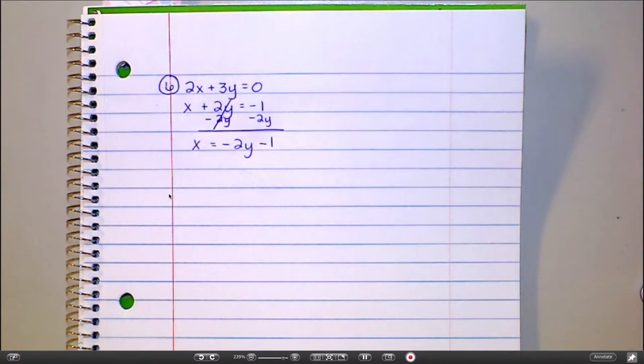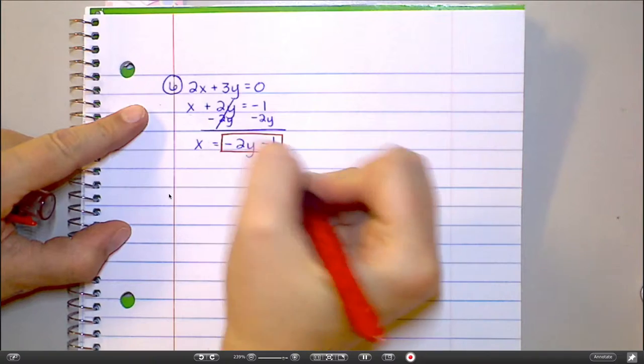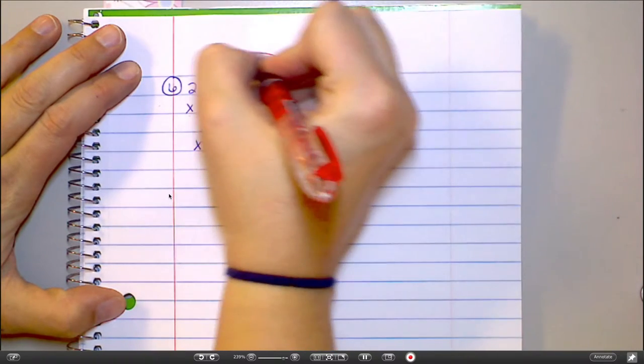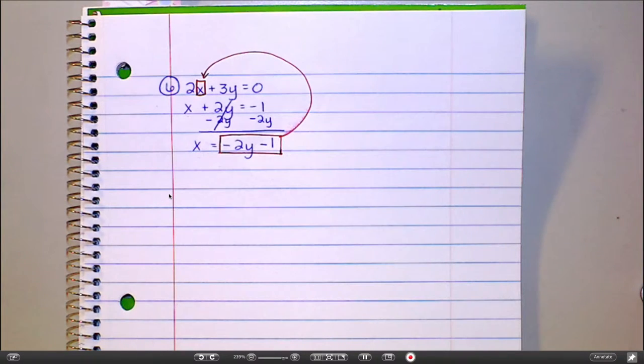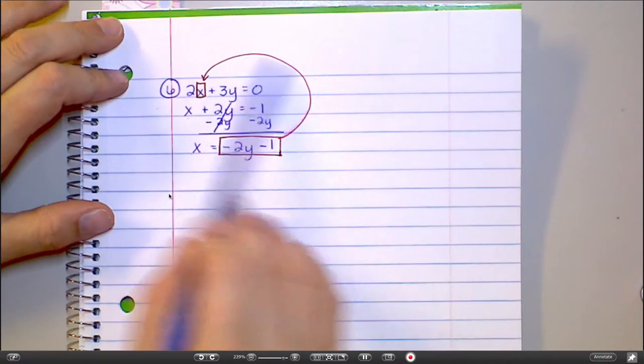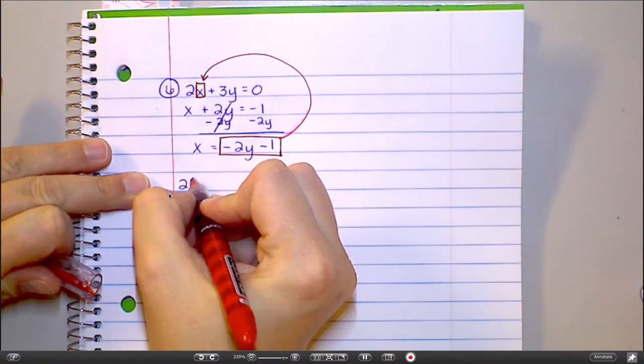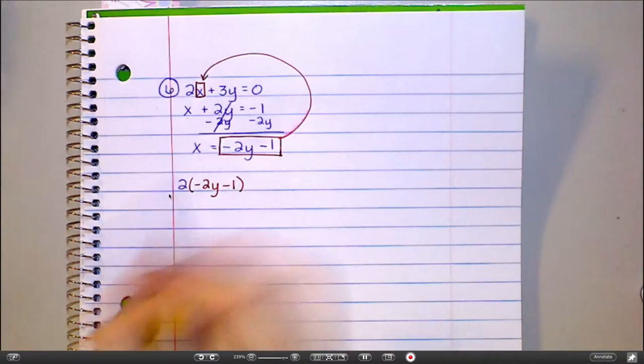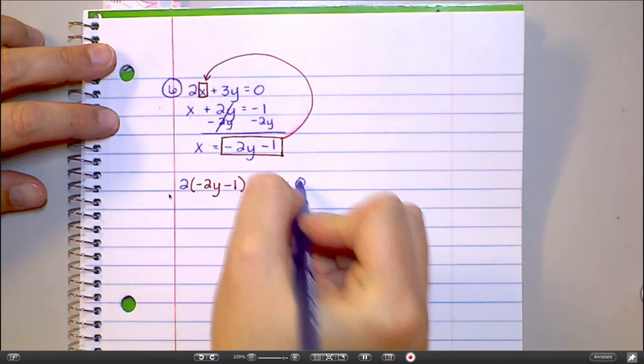And I'm going to take what x equals, the negative 2y minus 1, and put it where? In the equation. In for the x. So I'm going to go up to this equation and put this in place of this x right here. And why am I plugging in for x instead of y? Because you got the x. Because I solved for x. This is what x equals. So I'm plugging that in for x up here. So now that's going to look like this: 2, and then instead of x, I'm going to put in negative 2y minus 1. And then I'm going to finish out the rest of this equation. So plus 3y equals 0.